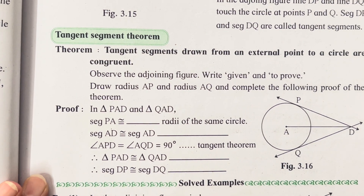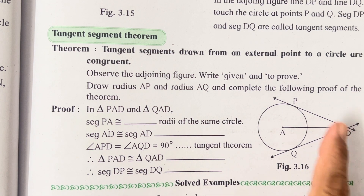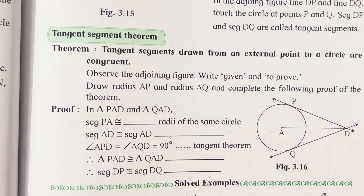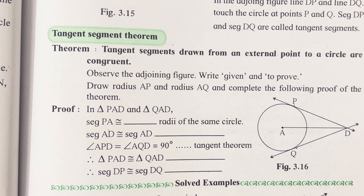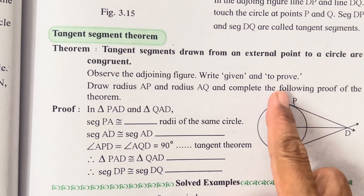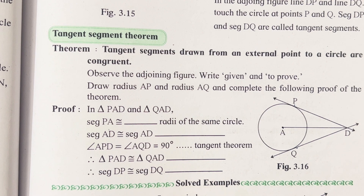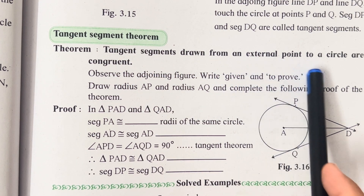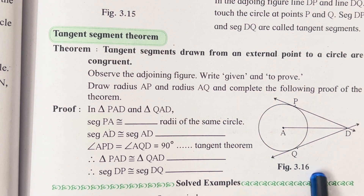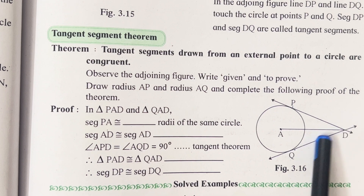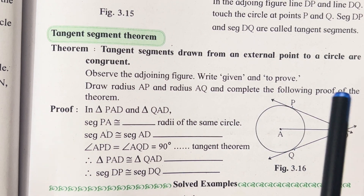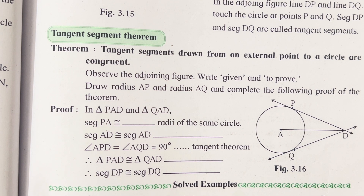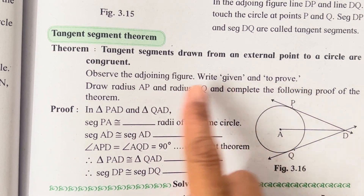Now let's move on to the next theorem, the tangent segment theorem. Over here you will see two tangents are drawn — we have seen that a tangent can join a circle at only one point, and each tangent has a corresponding radius. The statement states: tangent segments drawn from an external point to the circle are congruent. You have to take an external point D anywhere and draw two tangents joining two different points of the circle. Observing the figure, write given and prove.